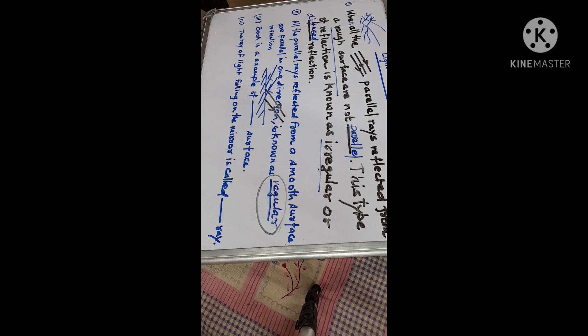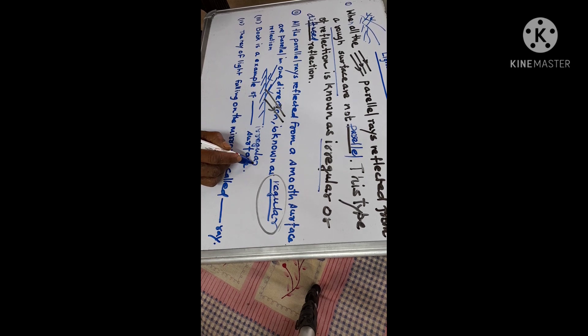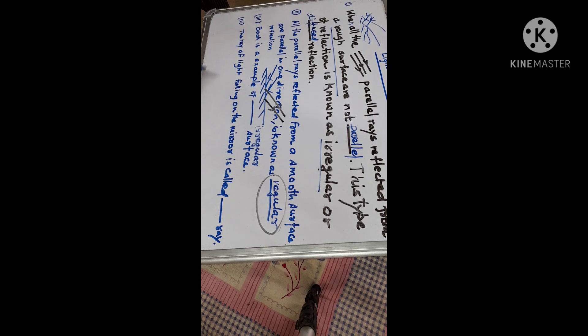Yes, third question is, book is an example of irregular surface. Irregular surface. Because the surface of book is not as smooth as that of mirror. It is not as smooth as that of mirror. So the surface of book is called irregular surface.